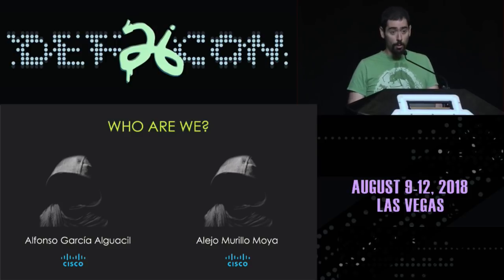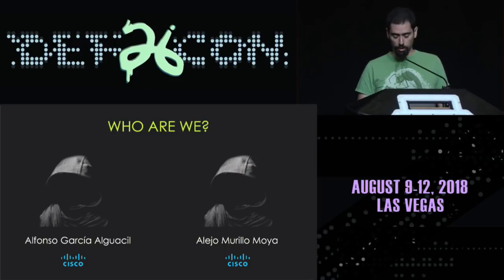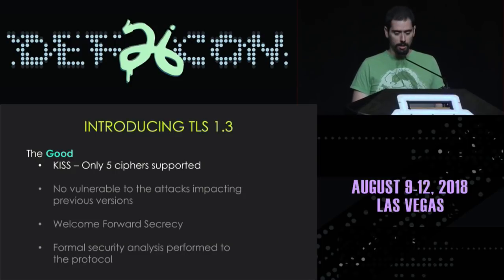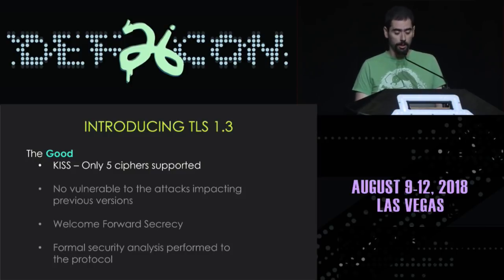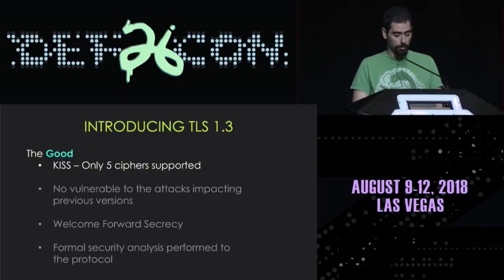Once we have introduced ourselves, let's introduce TLS 1.3. First, a bit of history. Four years ago, a working group was created with a mission to develop the new version of TLS — TLS 1.3. There have been 28 iterations of the protocol specification, and as you can imagine, that has been a long journey. Now let's move on to some of the good things that TLS 1.3 is going to bring.